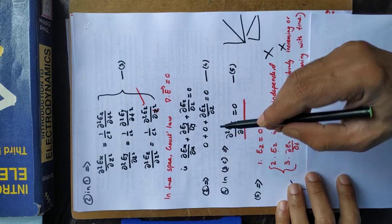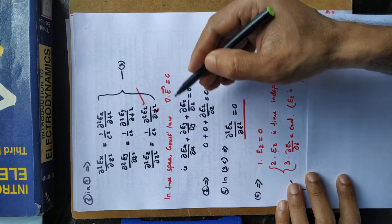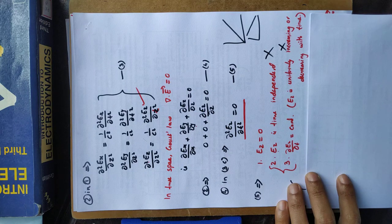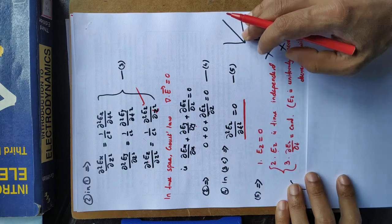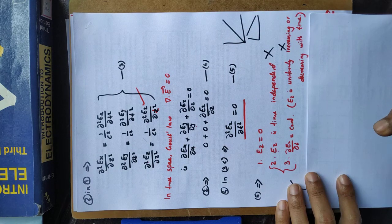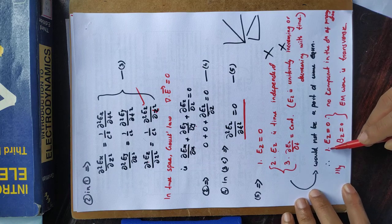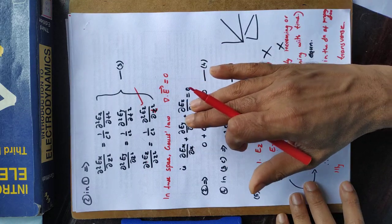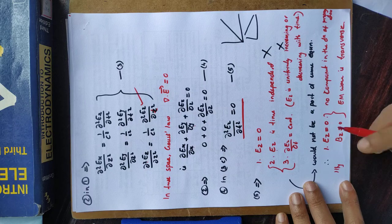Therefore Ez = 0. This restriction comes from del·E = 0 — Maxwell's equation — which restricts the z component of the electric field to vanish. Since we assumed the wave is propagating in the z direction and there is no z component in the field, the wave is not longitudinal but transverse.